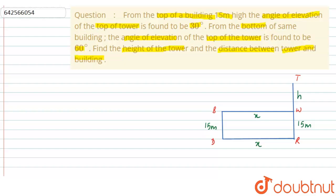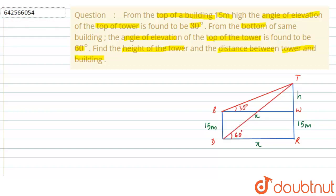We will name this part of the tower, TW, as h, so the height of the tower is h + 15. It is given that the angle of elevation of the top of the tower from the top of the building is 30 degrees, and the angle of elevation of the top of the tower from the bottom of the building is 60 degrees.